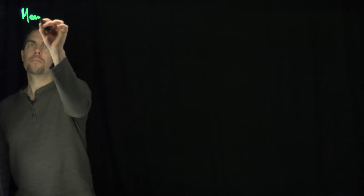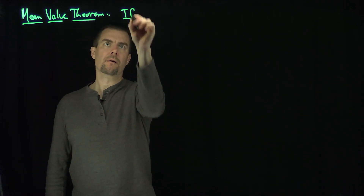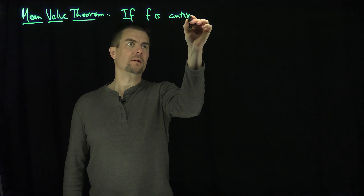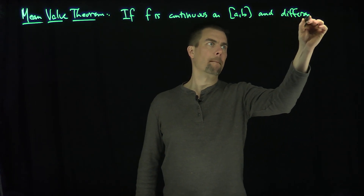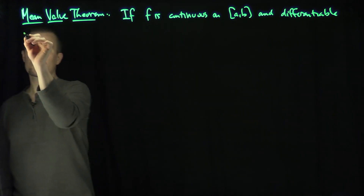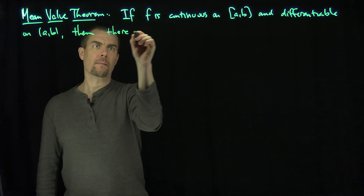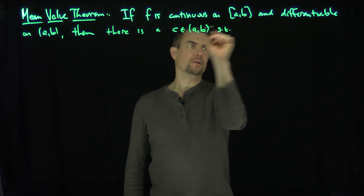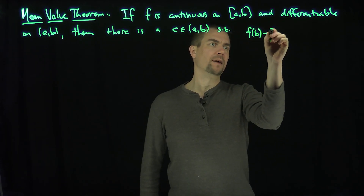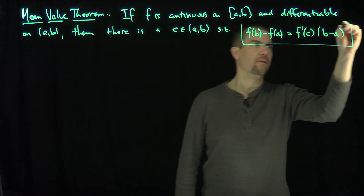Hello students, and this video will prove the Mean Value Theorem. The Mean Value Theorem states that if f is continuous on the closed interval ab and differentiable on the open interval ab, then there is a c on the interior of ab, such that f of b minus f of a is f prime of c times b minus a. So that is the statement of the Mean Value Theorem.